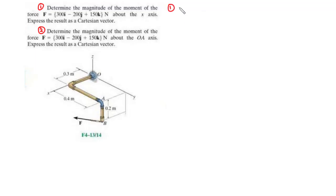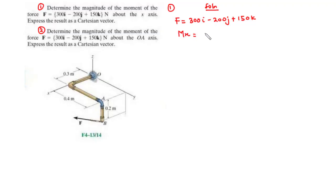For question 1, we are given the force as a Cartesian vector: 300i minus 200j plus 150k. We know that the moment about the X axis is given by Mx equals the dot product of the unit vector along the X axis and R cross F. We are given F, so let's focus on Ux and R. For Ux, the unit vector directed along the X axis — along the X axis we have a distance of 0.3 meters.